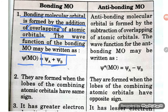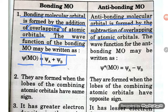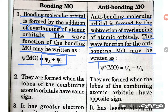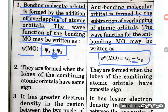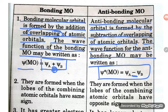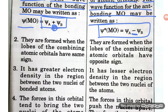Now let us understand the antibonding molecular orbital. The antibonding molecular orbital is formed by the subtraction of overlapping of atomic orbitals. The wave function of the antibonding molecular orbital may be written as ψ*_MO = ψa − ψb. So here there is a subtraction (negative sign), whereas in bonding there is addition (positive sign). Bonding molecular orbital is formed by additive overlapping, and antibonding is formed by subtractive overlapping.